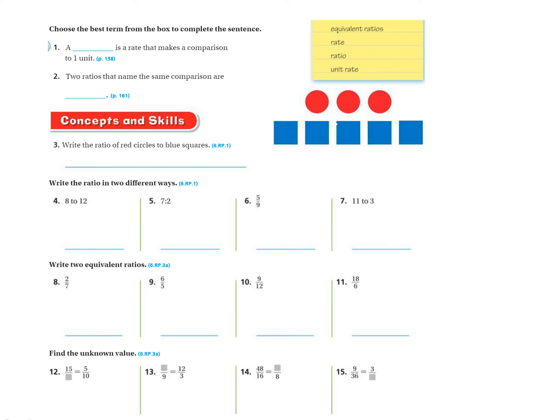I'm on the mid-chapter check for chapter 4. This is page 173 in the Big Go Math book. Follow along. I'm going to set these problems up.